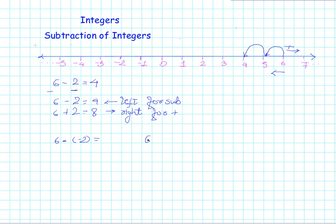If I want to add negative 2 to 6, how do I do it? To add a negative number, I go to the left hand side. So to add negative 2 to 6, I go left two times: I get 5, then 4. So adding negative 2 to 6 gives me 4. We have already studied this.